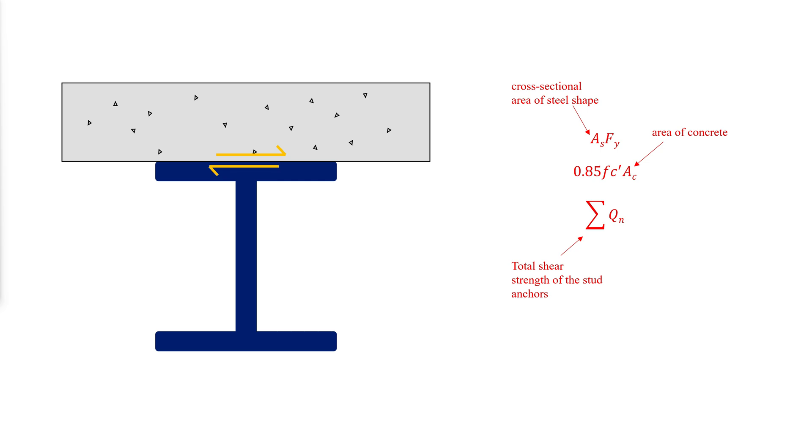When the first possibility controls, the neutral axis will be in the concrete slab. When the second possibility controls, the neutral axis will either be in the steel flange or steel web.